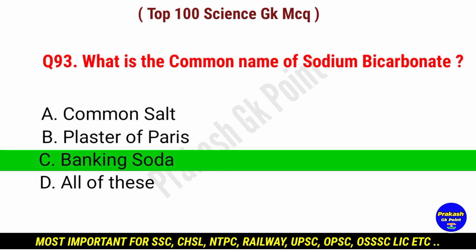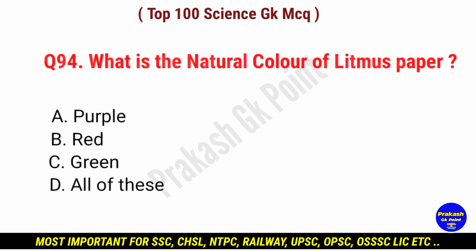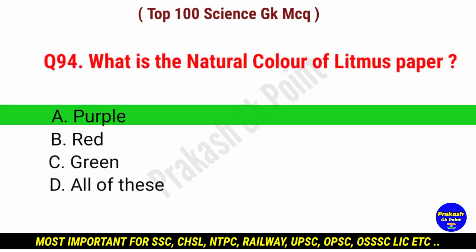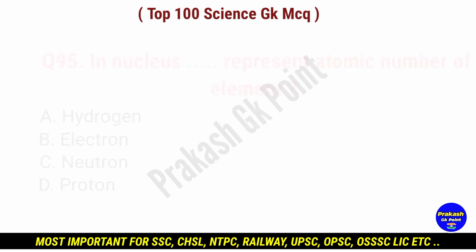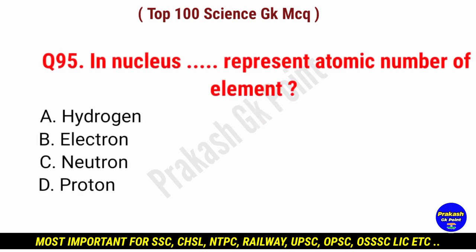What is the natural color of litmus paper? Answer: option A, purple color.